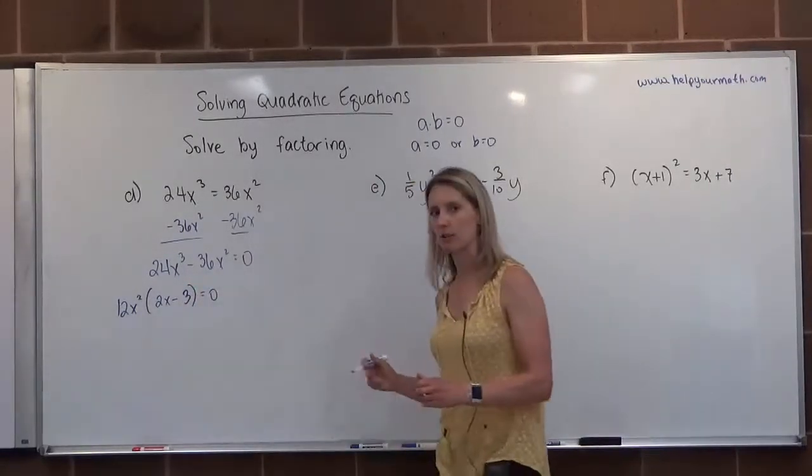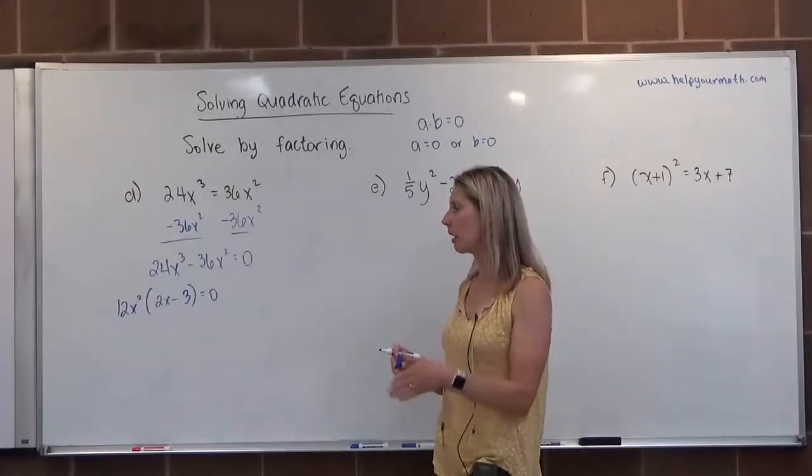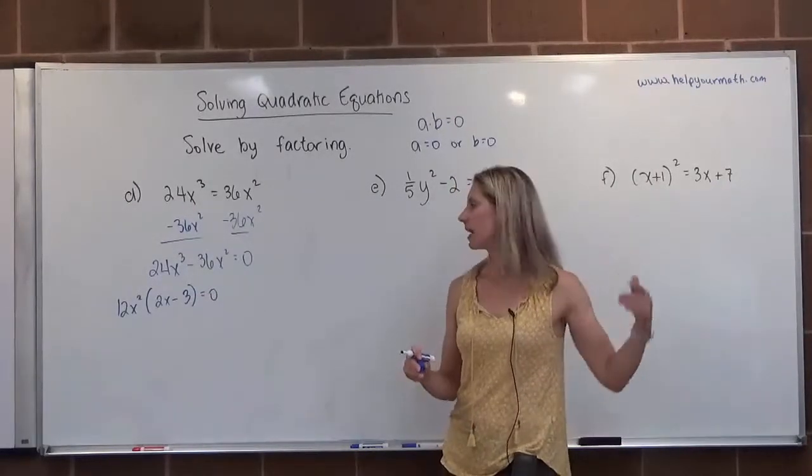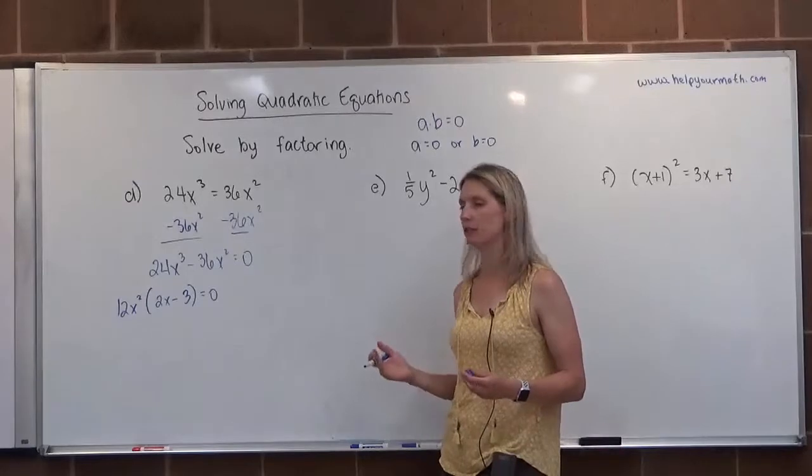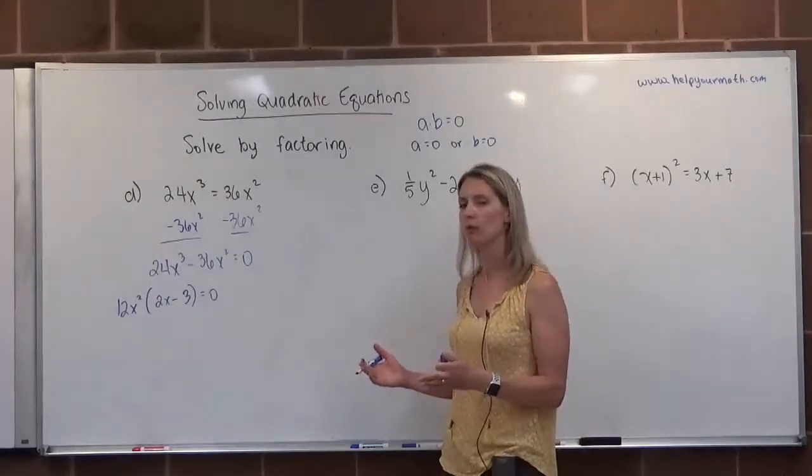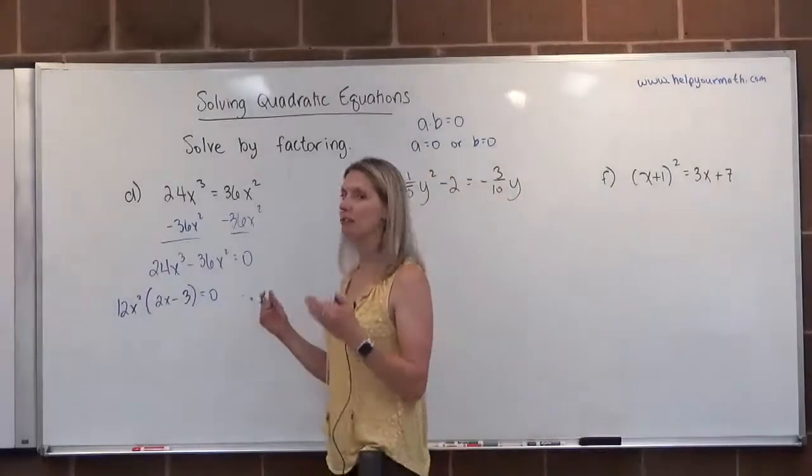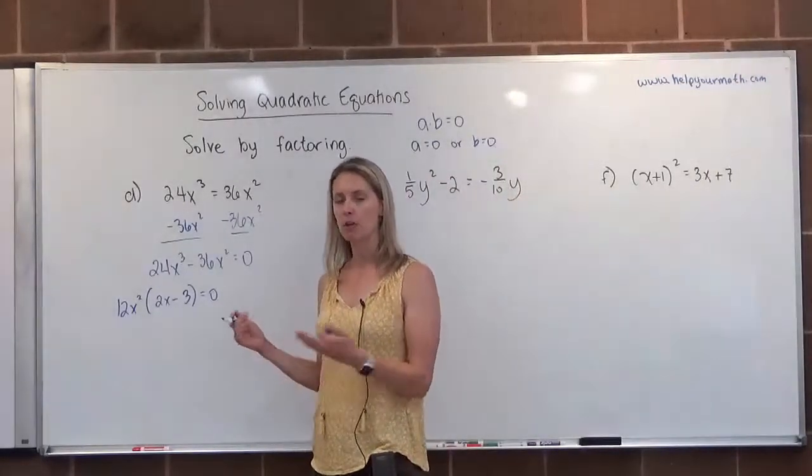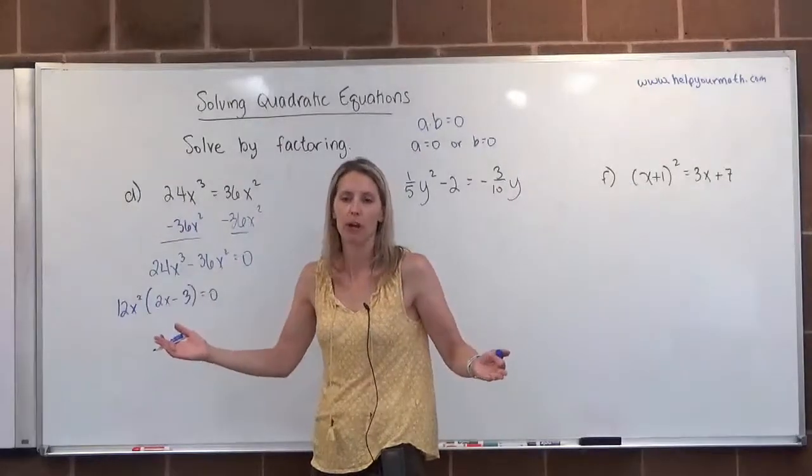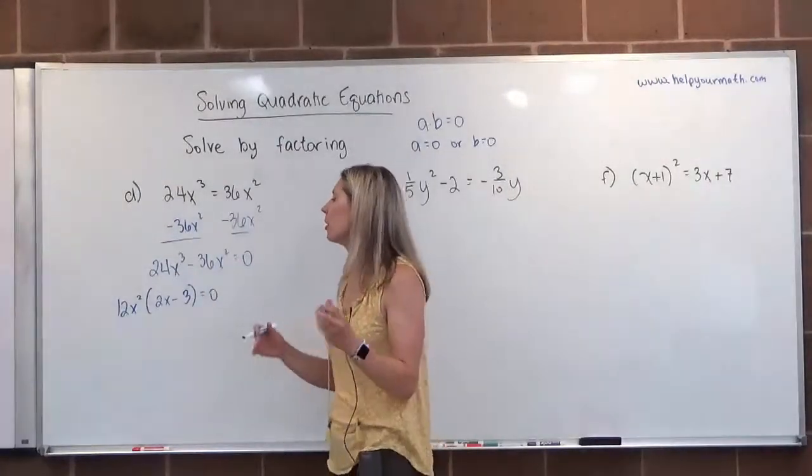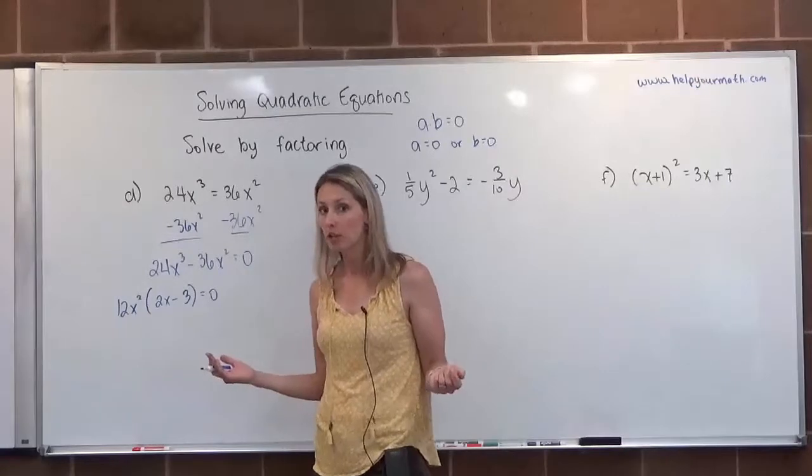So now I have a few factors equal to zero. 12 is a factor, x squared is a factor, and 2x minus 3 is a factor. It's up to you how you want to handle the 12. If you set each factor separately equal to zero you cannot set 12 equal to zero, so it gets thrown out.